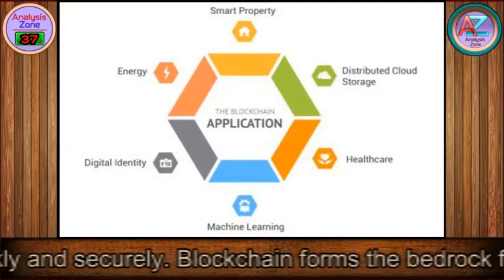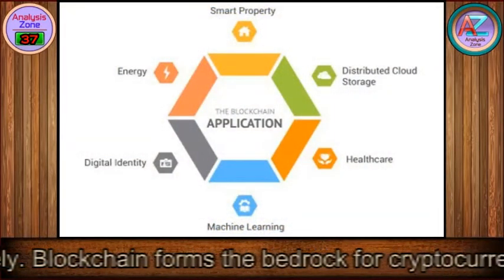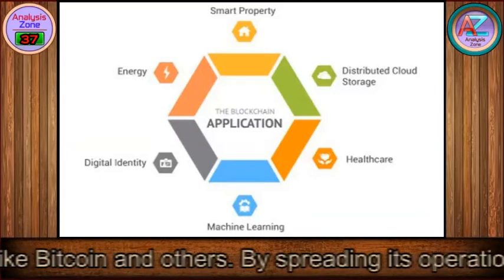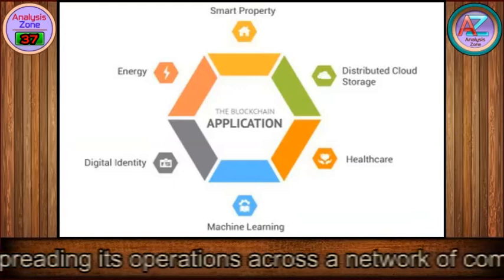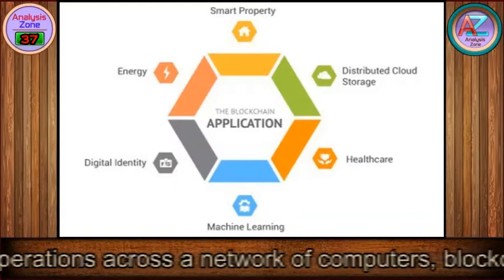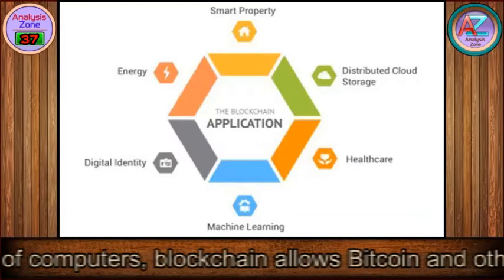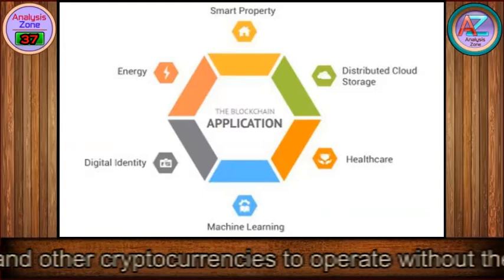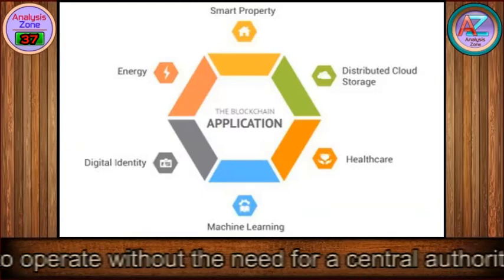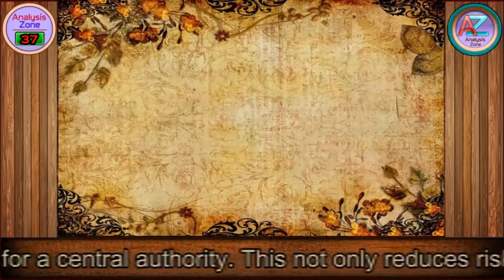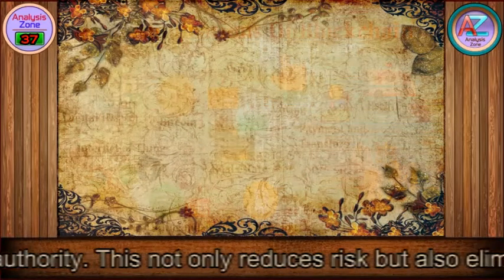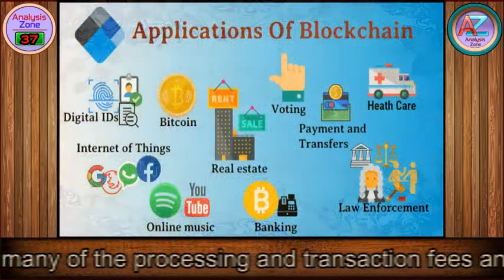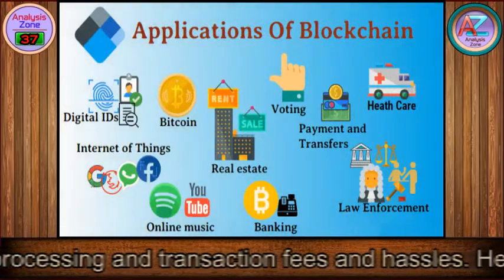Blockchain forms the bedrock for cryptocurrencies like Bitcoin and others. By spreading its operations across a network of computers, blockchain allows Bitcoin and other cryptocurrencies to operate without the need for a central authority. This not only reduces risk but also eliminates many of the processing and transaction fees and hassles.